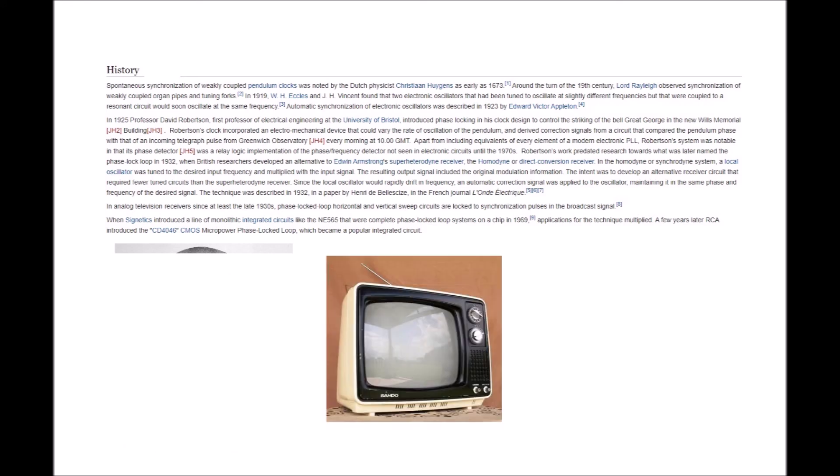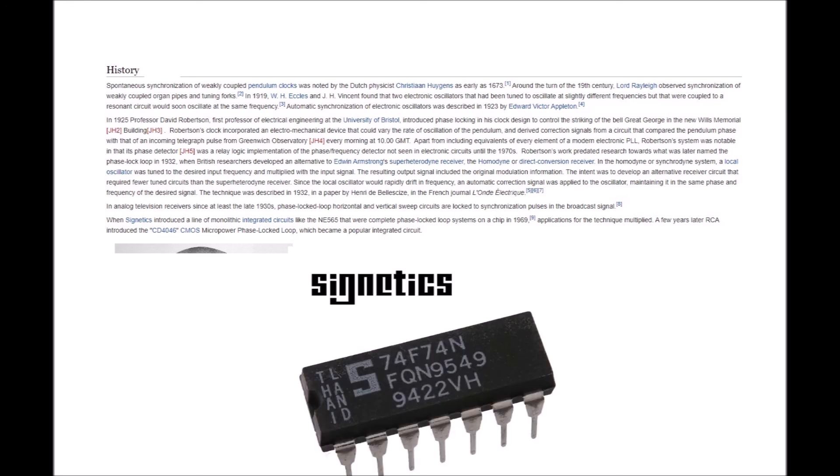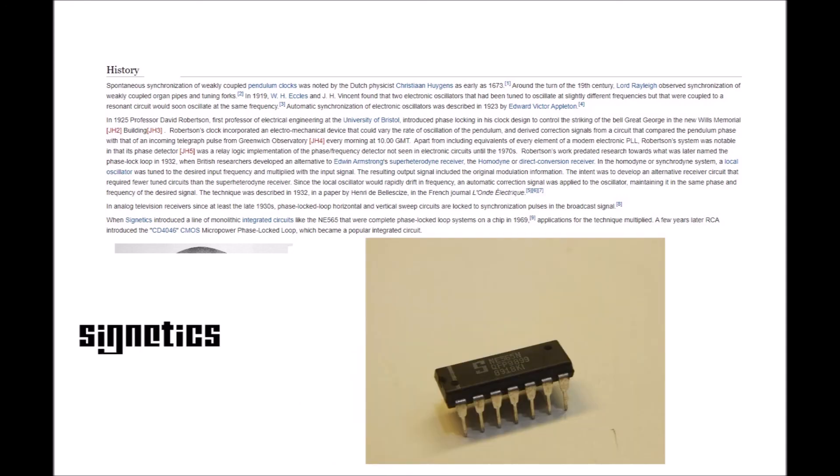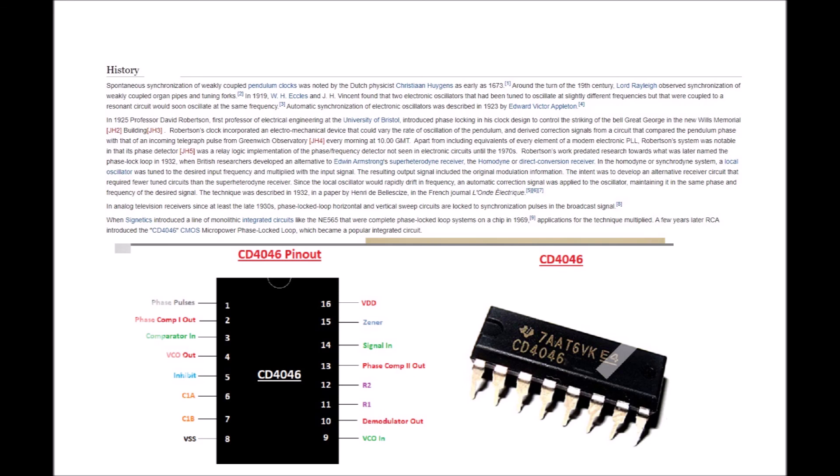In analog television receivers since at least the late 1930s, phase-locked loop horizontal and vertical sweep circuits are locked to synchronization pulses in the broadcast signal. When Signetics introduced a line of monolithic integrated circuits like the NE565 that were complete phase-locked loop systems on a chip in 1969, applications for the technique multiplied. A few years later, RCA introduced the CD4046 CMOS micro-power phase-locked loop, which became a popular integrated circuit.